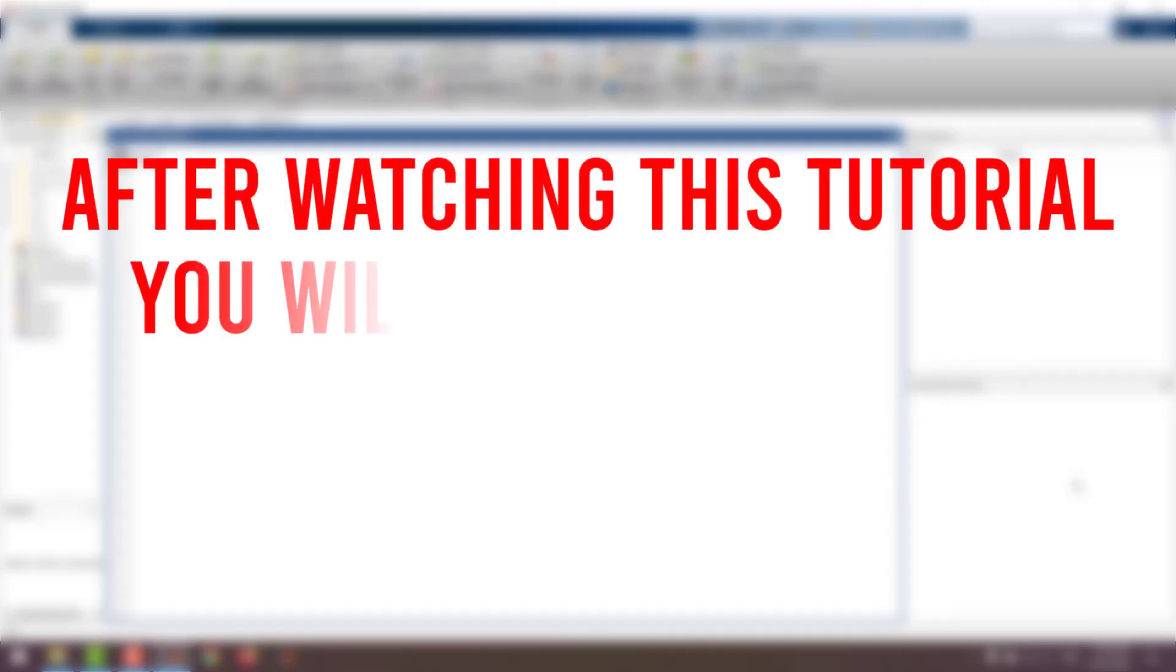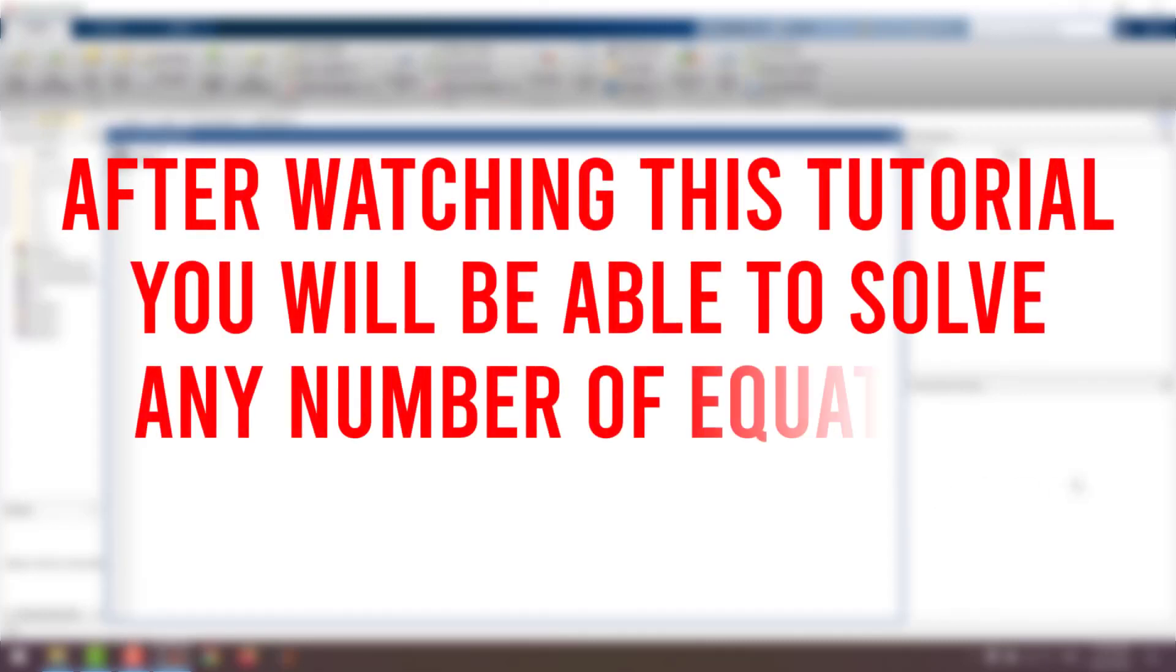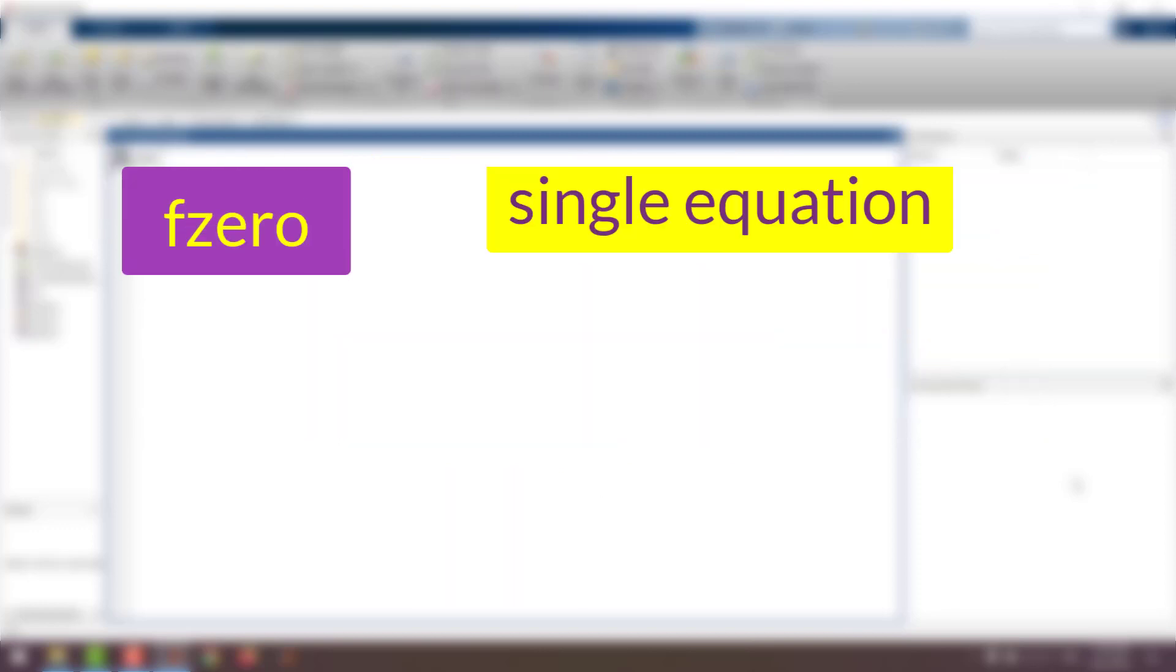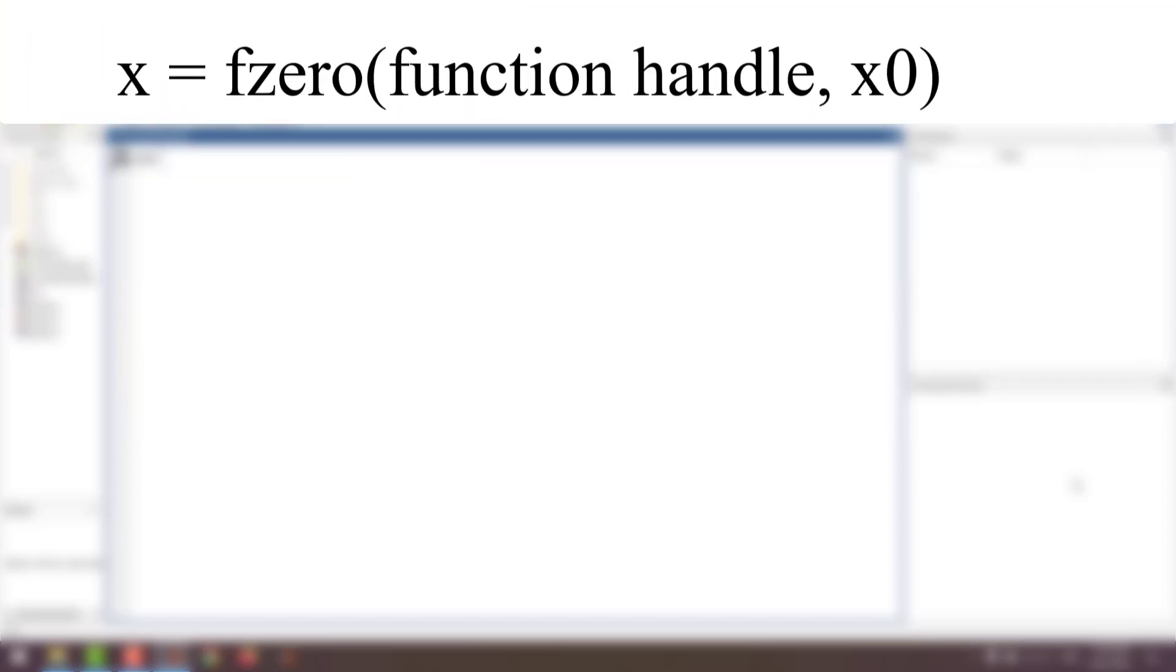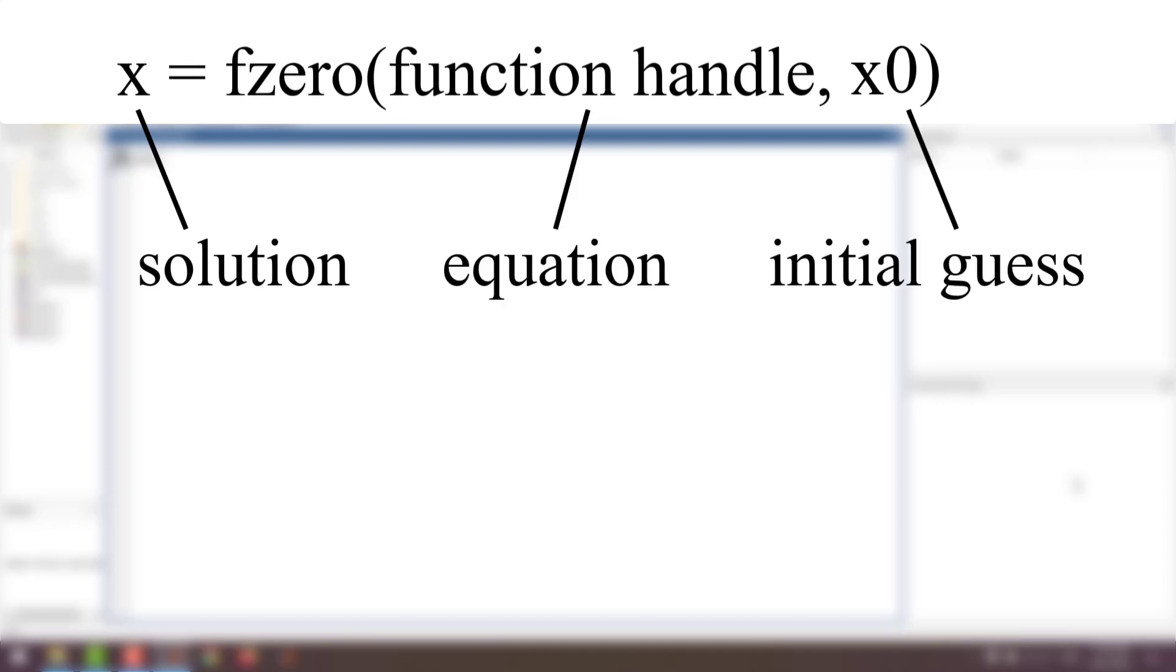After watching this tutorial you will be able to solve any number of equations in MATLAB. I'm going to introduce these commands: fzero for a single equation and fsolve for a system of equations. The general form of fzero is x equals fzero function handle comma x0, so it takes only a function and a starting point which is your first guess. It finds the zeros of the functions so the right hand side is always zero.